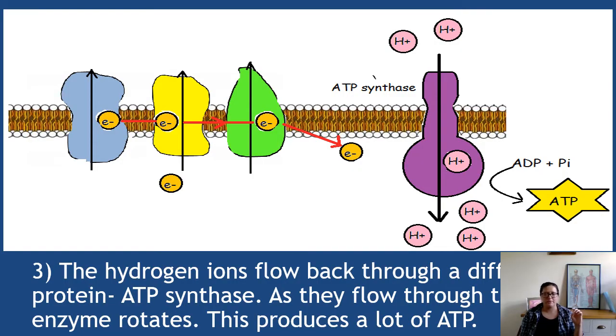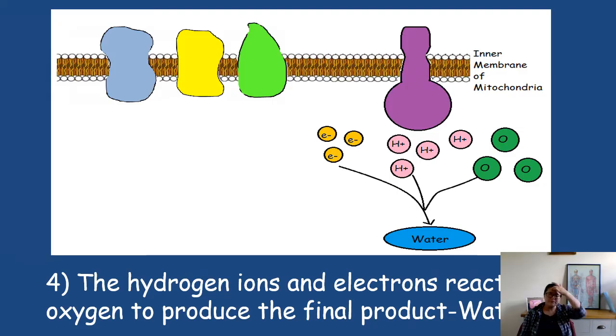And the idea is ADP and Pi are going to be joined together by this spinning enzyme to create loads of ATP, absolutely buckets of it. Now we have a problem at the end. We've got a bunch of hydrogen ions and electrons sitting about doing nothing and this is where the aerobic side of things comes in. The hydrogen ions and electrons join together with oxygen to form water and that is the final product.